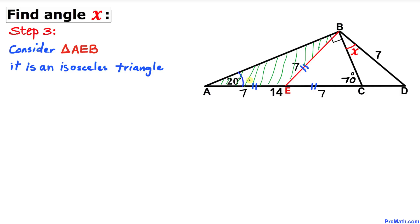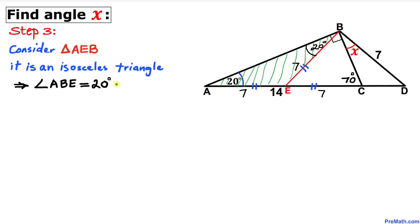Here's our next step. Let's consider triangle AEB. We know that this is an isosceles triangle since AE equals BE. If angle A is 20 degrees, angle ABE has got to be 20 degrees as well. Thus angle ABE turns out to be 20 degrees.